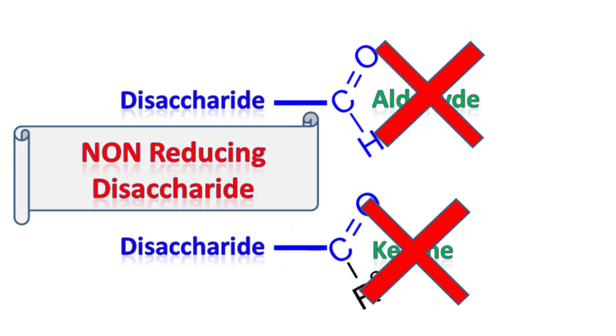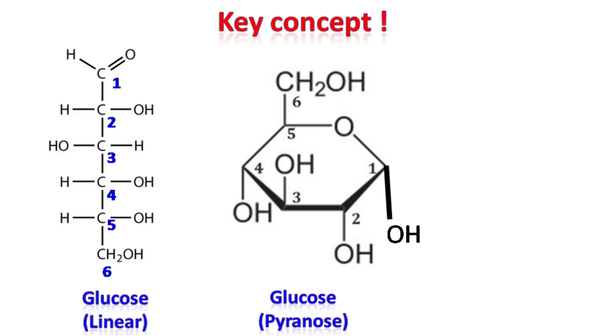Example of a non-reducing disaccharide is sucrose. Now take a pause and look carefully. As far as the structure of disaccharides is concerned, they are represented in pyranose or furanose form.